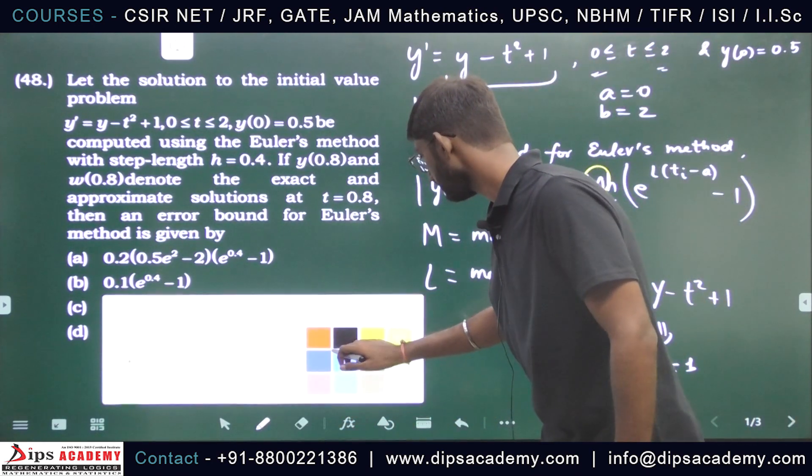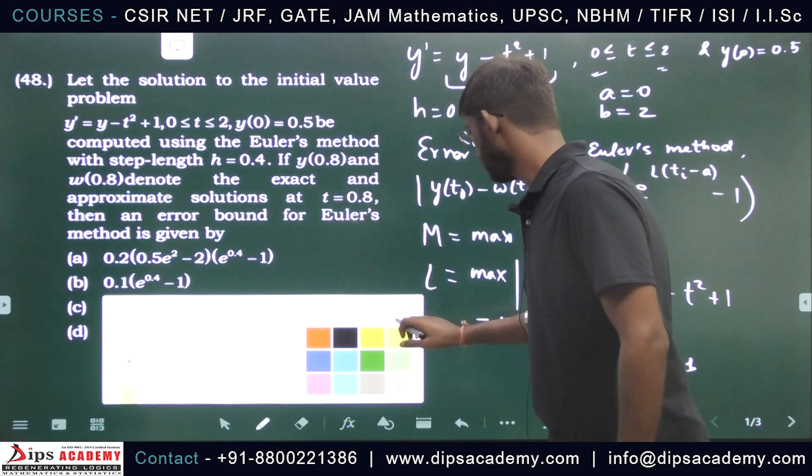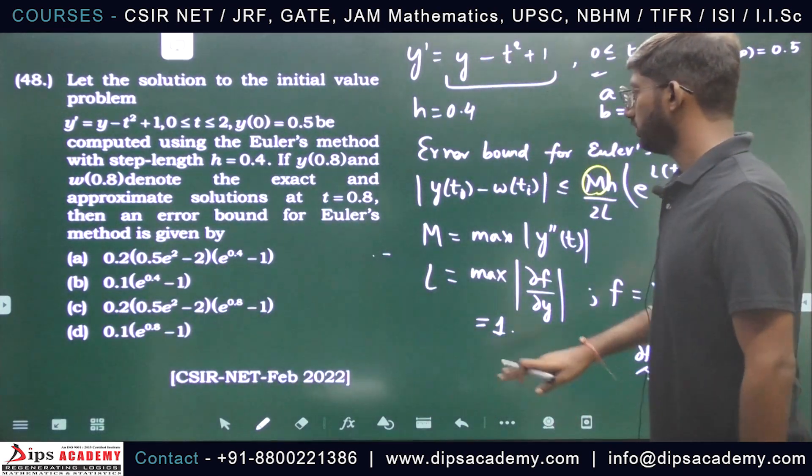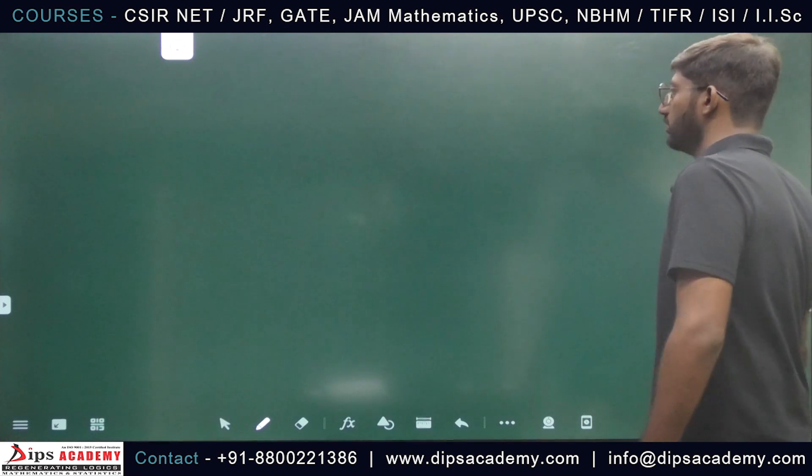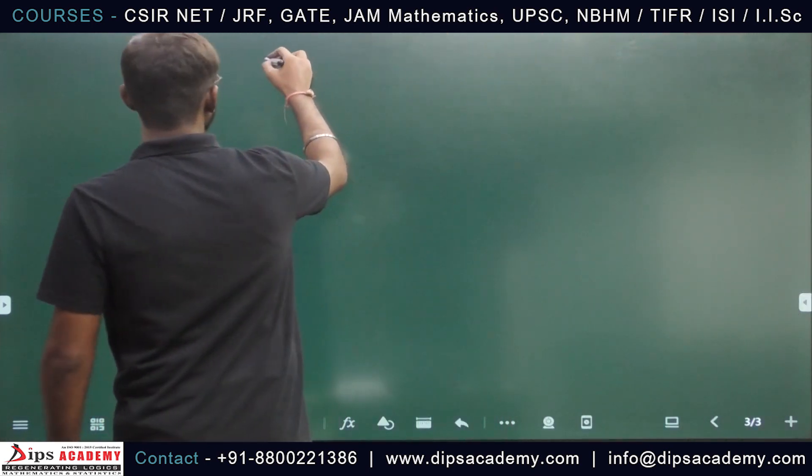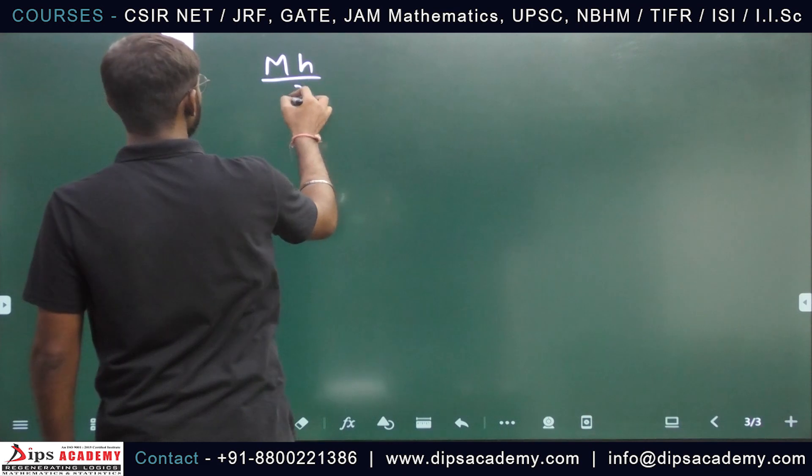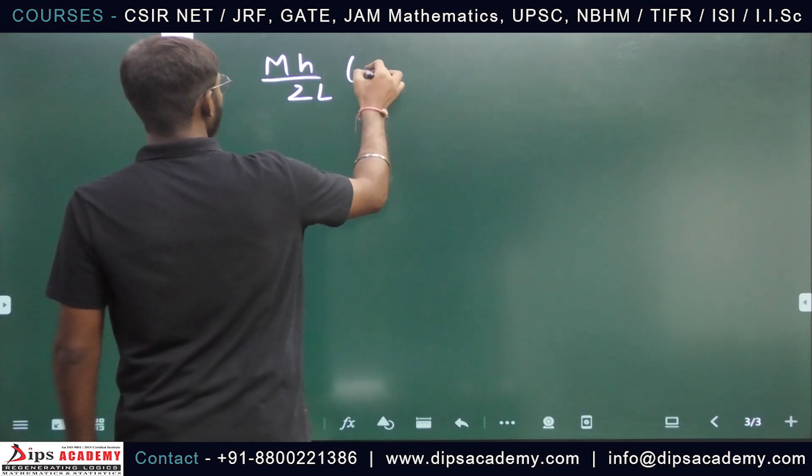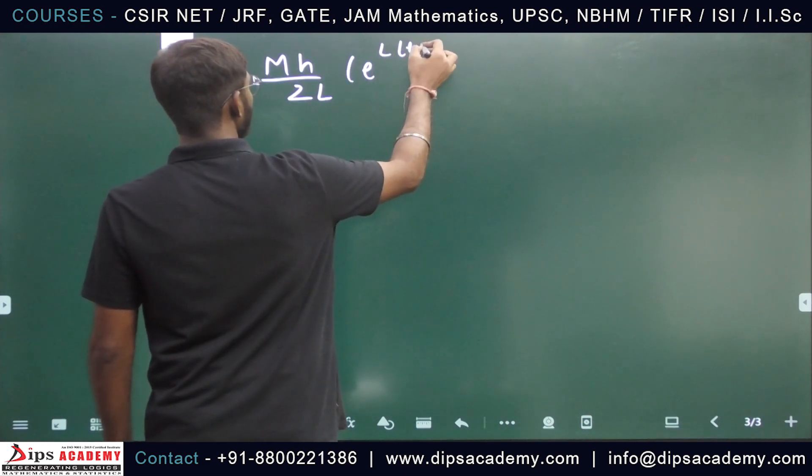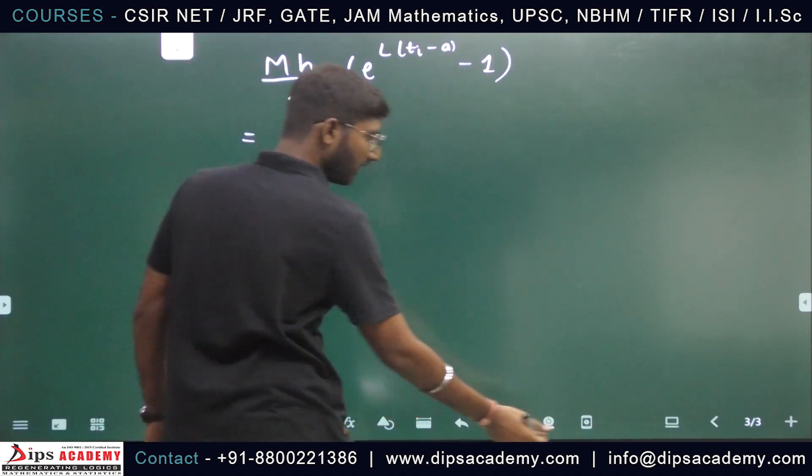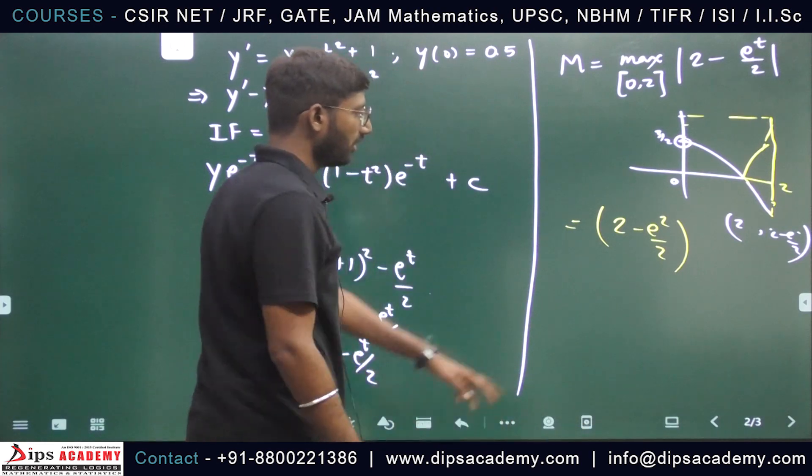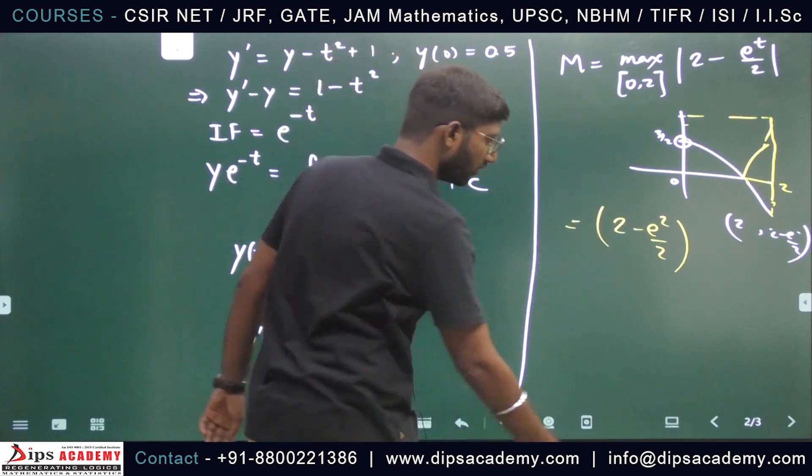So we have m*h/2*L*e^(L*(ti-a)) - 1. We just calculated m. What did m come out to be? Half of e squared minus 2.